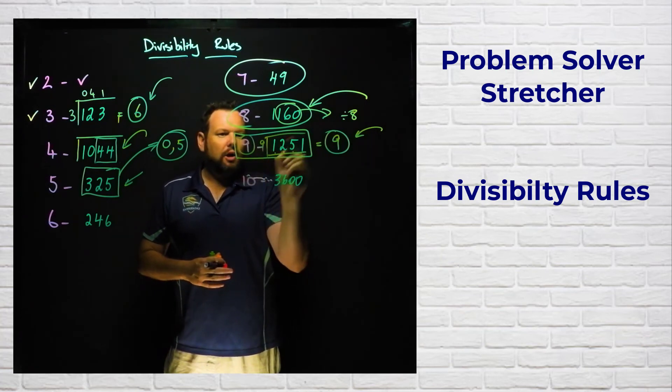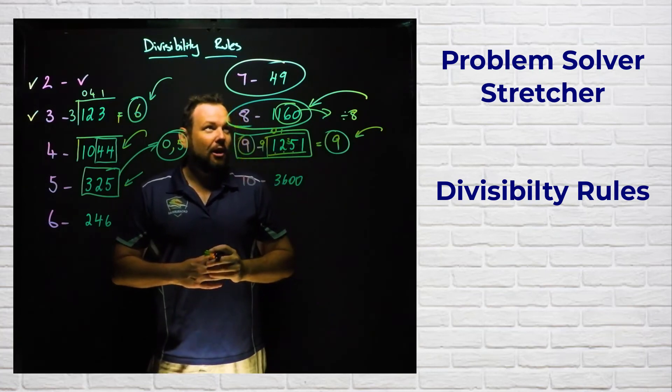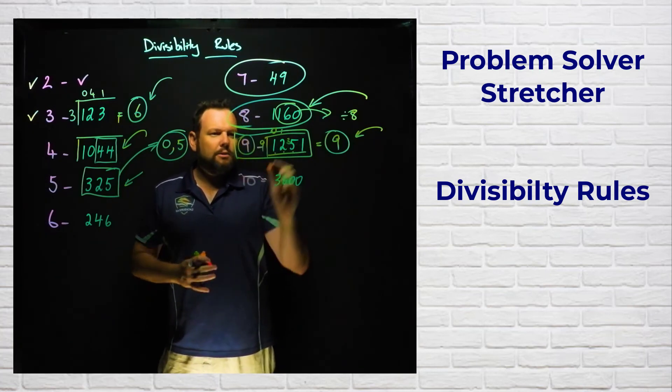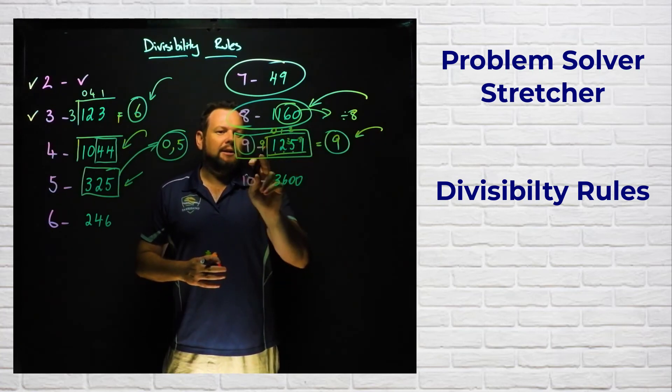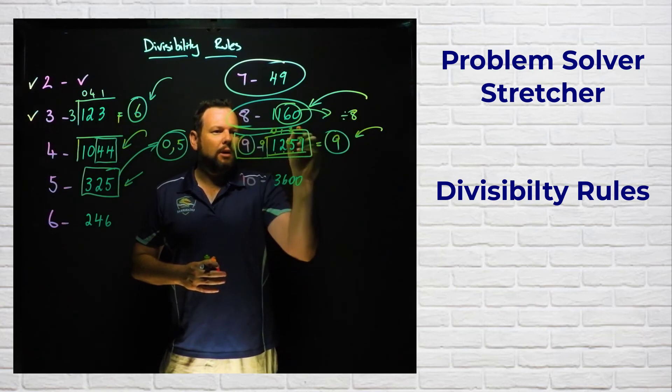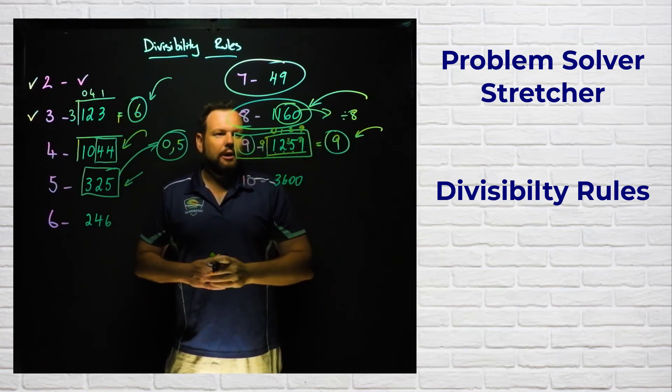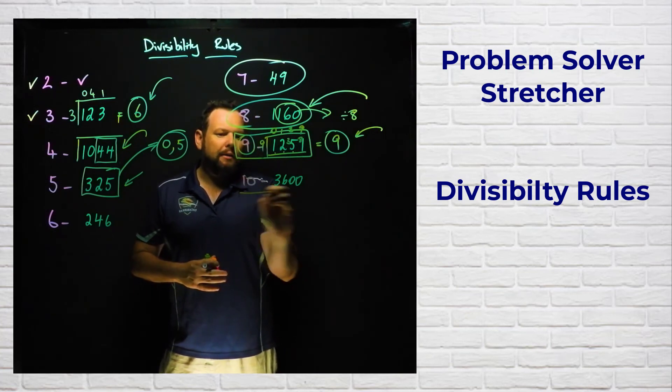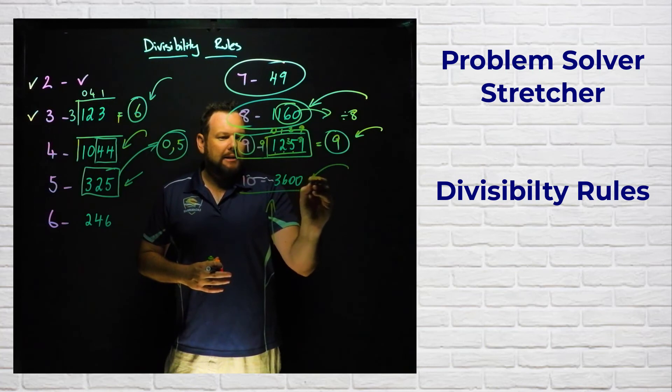So nine goes into 12 one time with three left over, nine goes into 35 three times with eight left over, and then nine goes into 81 nine times. So our answer there is 139. Now here, 10, the easiest of them all. Your number has to end in the zero. If it ends in a zero then you're all good.